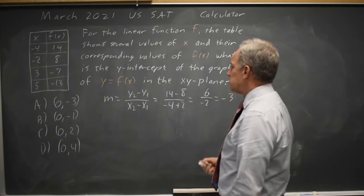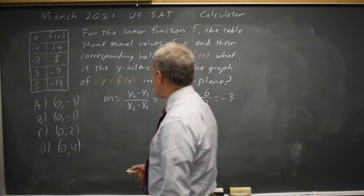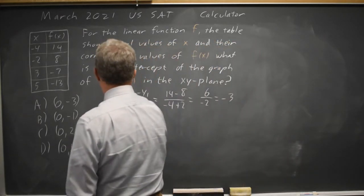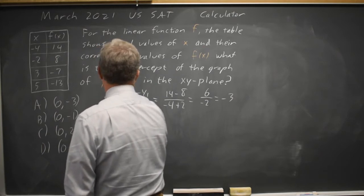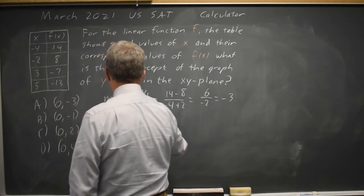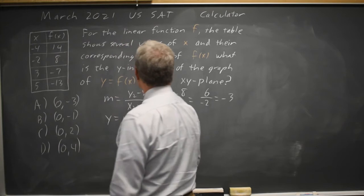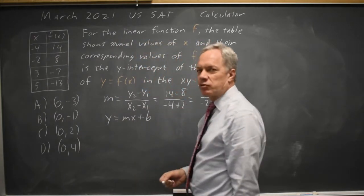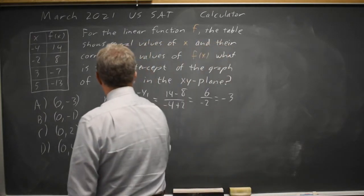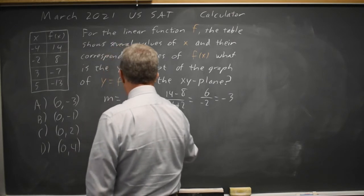Our slope is negative 3 and we know that y equals mx plus b where b is the y-intercept, the value we're looking for. So y equals m is 3, negative 3x plus b.